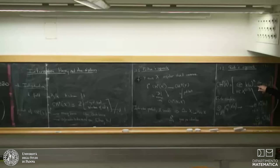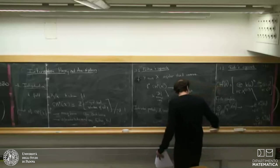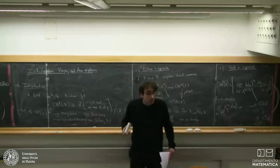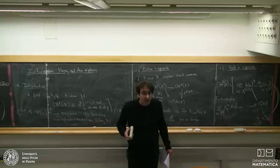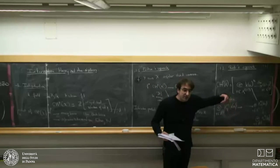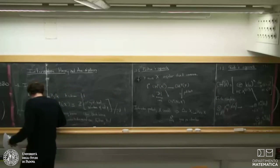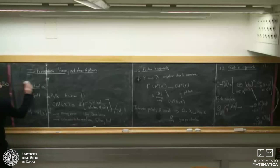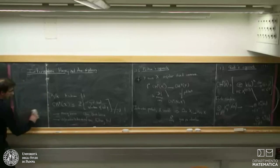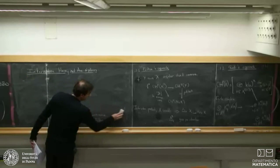What Marcus Rost wants to do is construct intersection theory for the whole complex — the whole Gersten complex — and he does that. The differential is given by the residue map for Milnor K-theory, which I will explain. The good point of this approach is that you can do almost everything at the level of complexes.